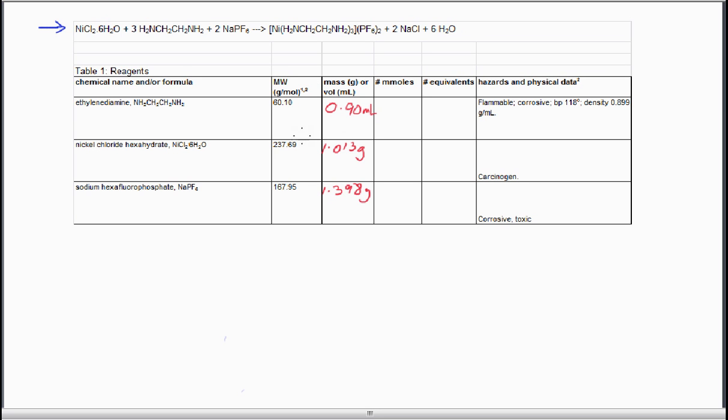Having used the volume, we need to convert into a mass to proceed with the calculation, so we need to look up the density, 0.899 grams per mil. Recall that density is mass over volume, so if we multiply the density times the volume we will get a mass. If we do 0.90 times 0.899, we have a value of 0.81 grams.